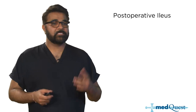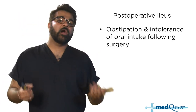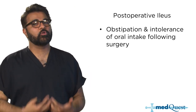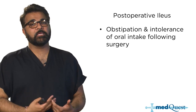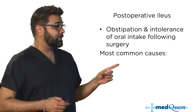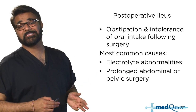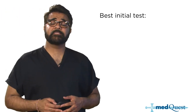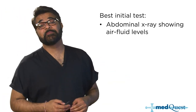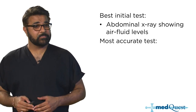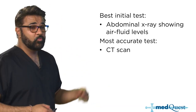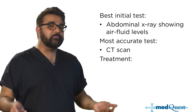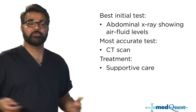Post-op ileus is obstipation and intolerance of oral intake following surgery. It is like an obstruction but with no actual physical change — the gut is simply sluggish. Most common causes are electrolyte abnormalities, prolonged surgery, sepsis, and perioperative opiate use. The best initial test is an abdominal X-ray showing air-fluid levels; the most accurate test is CT scan. Treatment is addressing the underlying problem: remove offending agents, fix electrolytes, and provide supportive care.